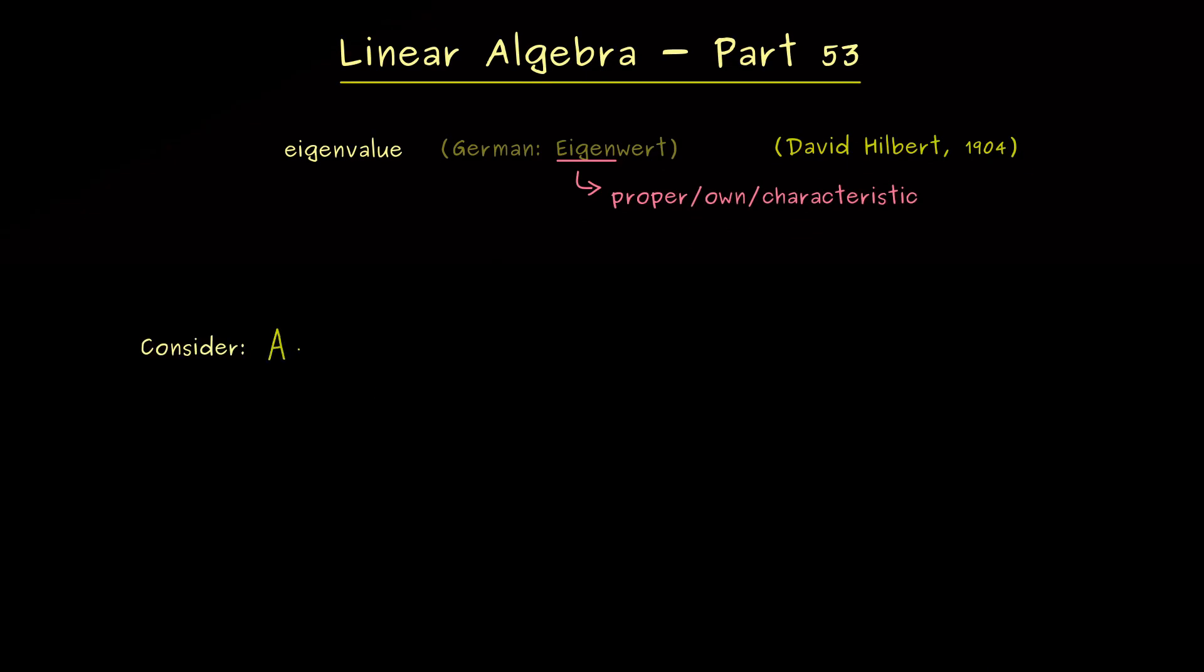Namely, we have to consider a square matrix A. So in general, we have an n times n matrix and we already know this corresponds to a linear map. As usual, we call this f_A and it maps ℝⁿ into ℝⁿ. Hence, when we talk about Eigenvalues, we also talk about linear transformations. And as always, these transformations can be visualized nicely in ℝ².